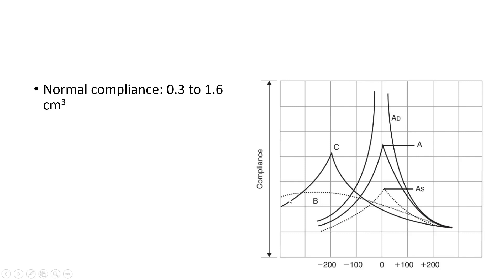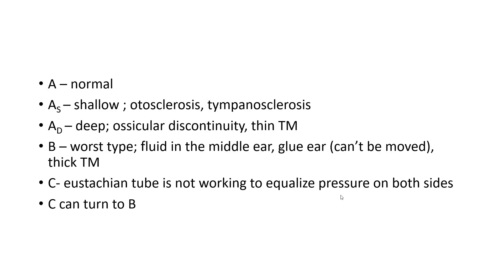We have another curve — type B curve. This is a flat curve. No amount of pressure change is able to transmit the sound waves through the middle and inner ear. This kind of graph is seen in cases when there is fluid in the middle ear. Think about conditions when your friend is inside a swimming pool — fluid reflects most of the sound, so most sound is reflected back no matter how much you change the pressure. This is seen in conditions such as otitis media with effusion, secretory otitis media, or glue ear. In summary: AS is seen in otosclerosis or tympanic sclerosis; AD is the deep curve seen in ossicular discontinuity or thin tympanic membrane; B type curve is seen when there is fluid in the middle ear or thick tympanic membrane.